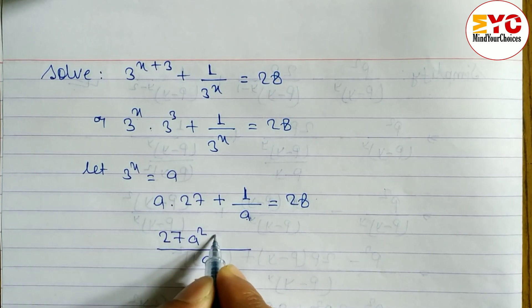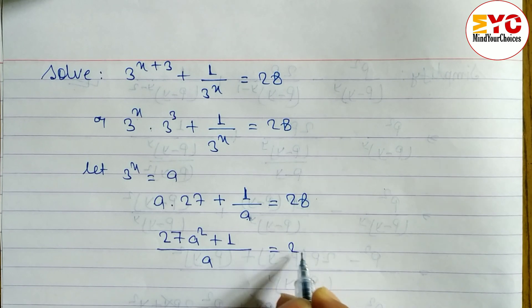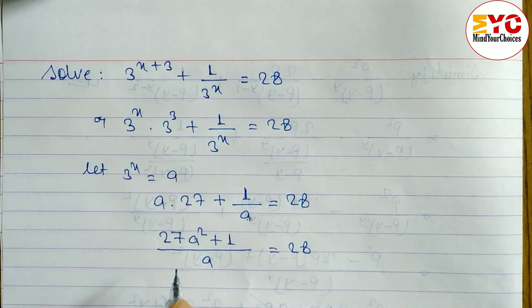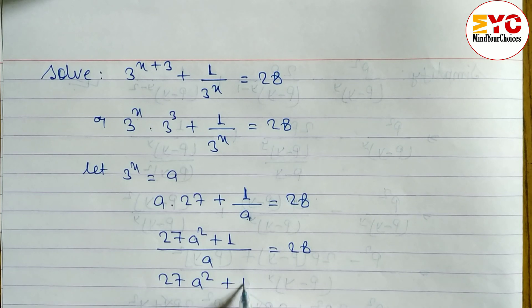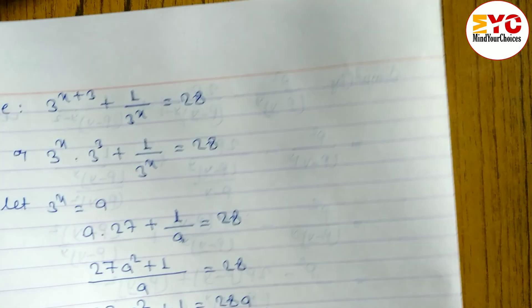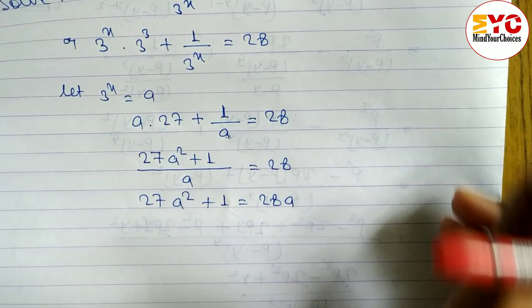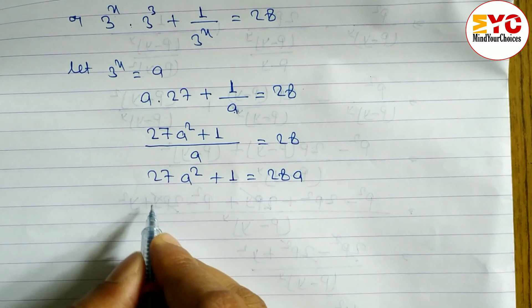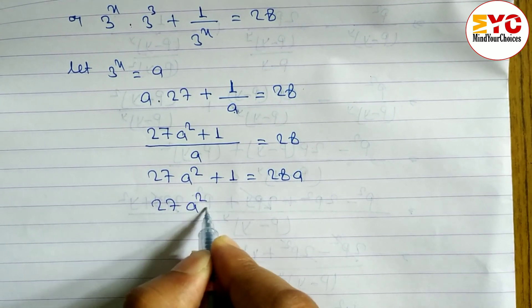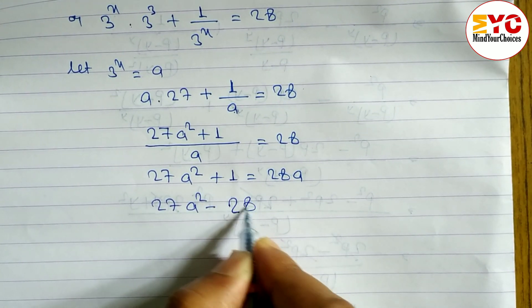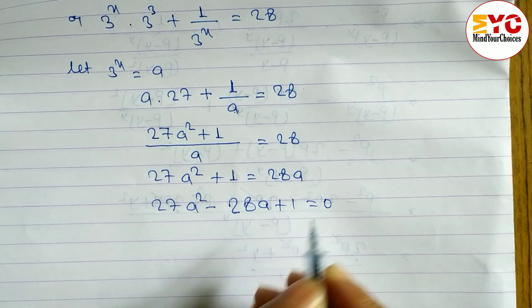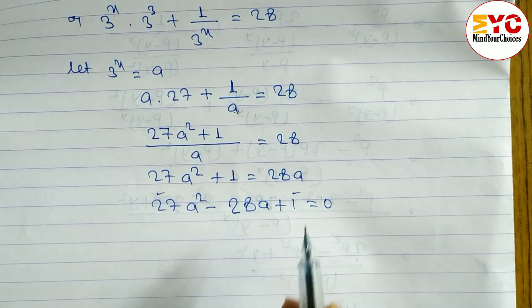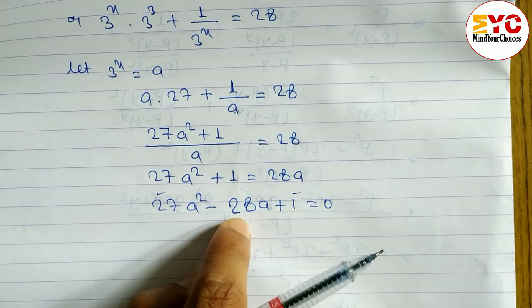So we can write 27a squared plus 1 is equal to 28a. Now we cross multiply and arrange: 27a squared minus 28a plus 1 is equal to 0. Now 27 into 1 is 27, and while adding we need 28, so we have to find two factors whose multiplication is 27 and addition is 28.